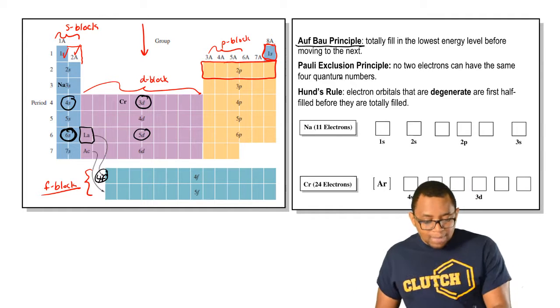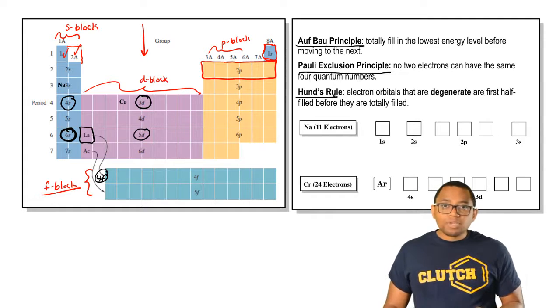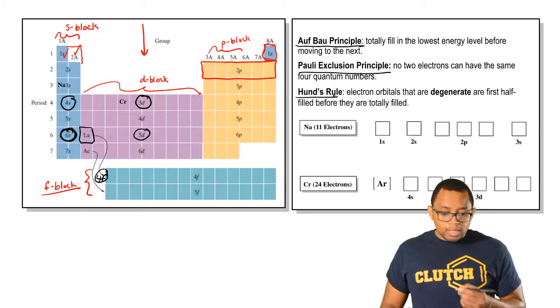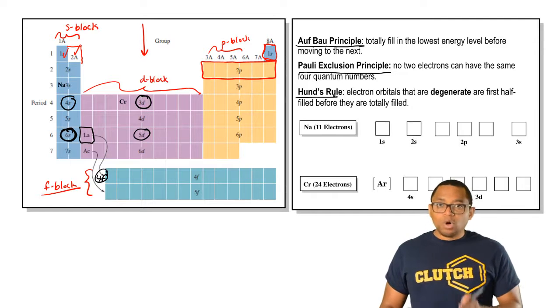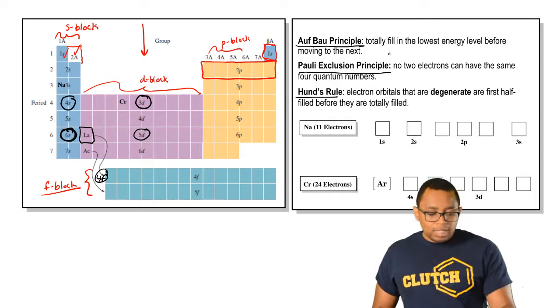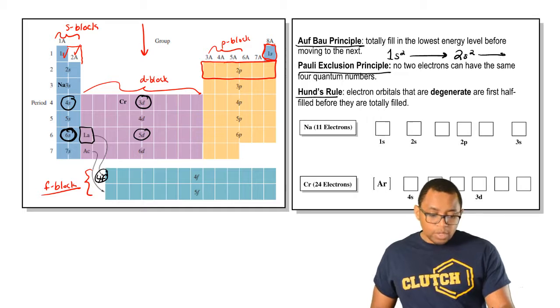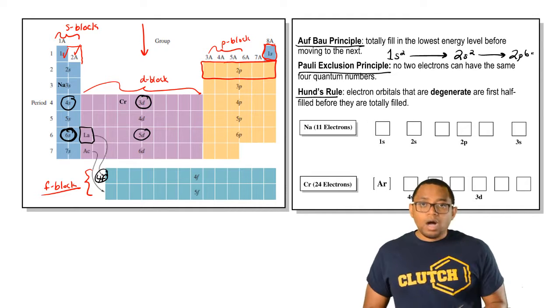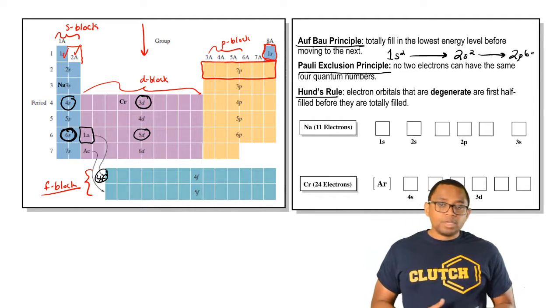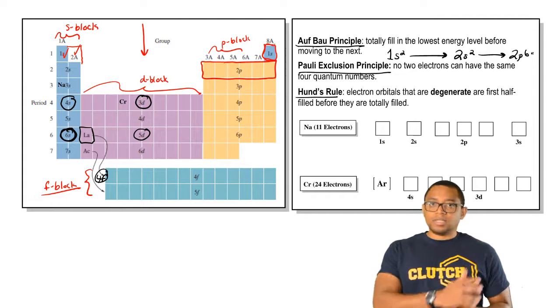Now when we're doing the electron configuration of an element or ion, it's important to remember three common definitions. We have the Aufbau principle, Pauli Exclusion principle, and Hund's rule. The Aufbau principle basically says we totally fill in the lowest energy level before moving to the next. So that means we go 1S2, before we go to 2S2, before we go to 2P6. Aufbau is German for buildup, so you wouldn't just skip 2S. You'd have to go 1S, then to 2S, then to 2P.